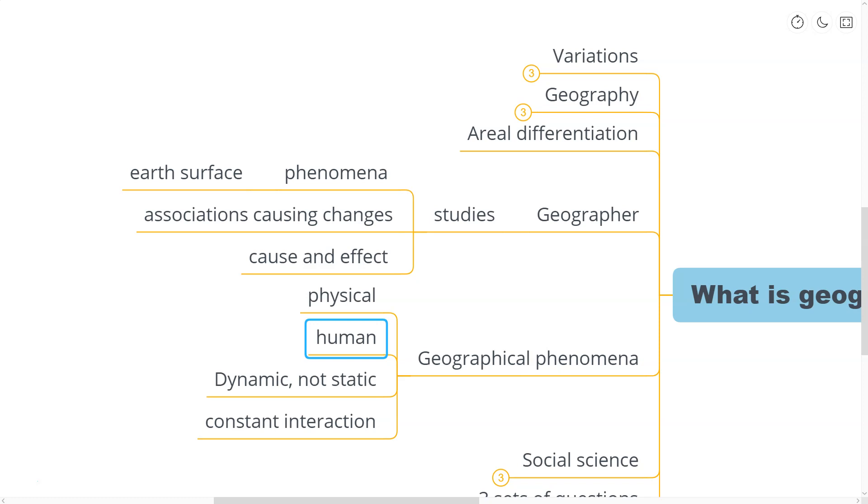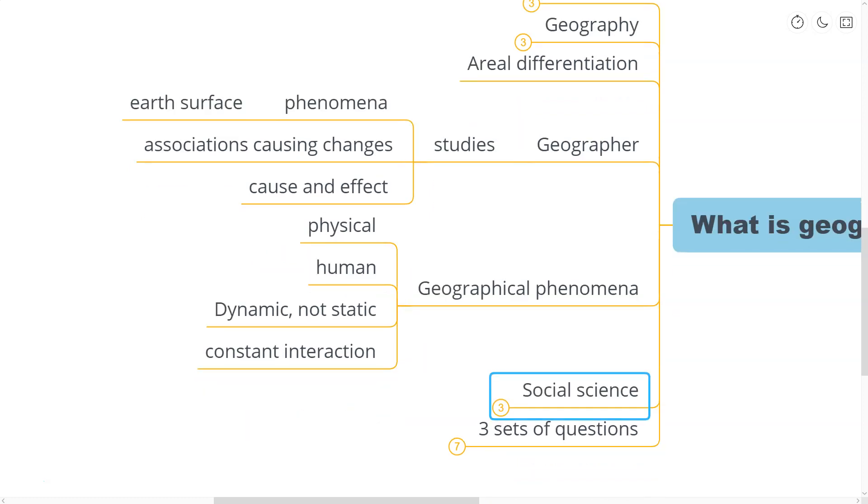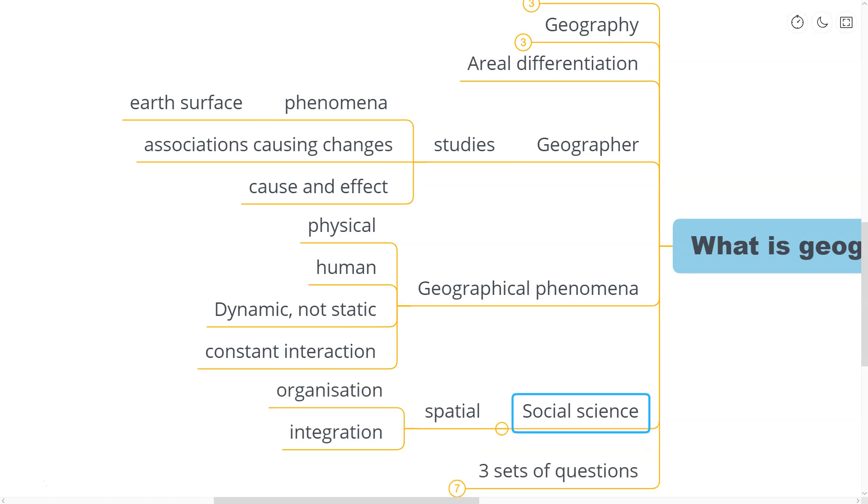The space got organized with the means of transportation and communication network. The links, i.e. the routes and the nodes, settlements of all types and hierarchies, integrated the space, and gradually it got organized. As a social science, geography studies the spatial organization as well as the spatial integration. Spatial means relating to the space.